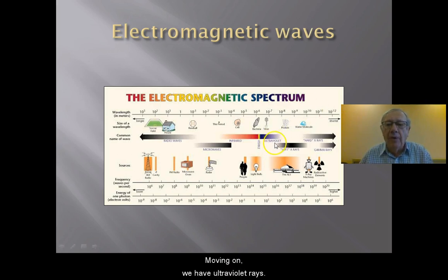Moving on we have ultraviolet rays. They are again non-mechanical. They are electromagnetic waves. Then we have x-rays. We also have gamma rays. So these are the two big families or groups or ways in which we can classify waves.